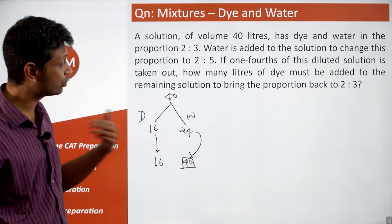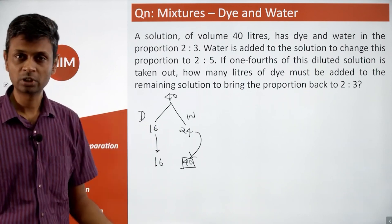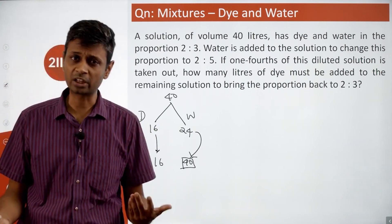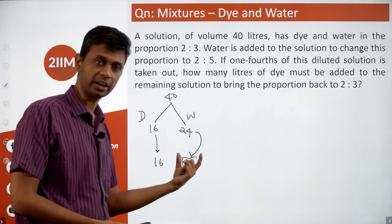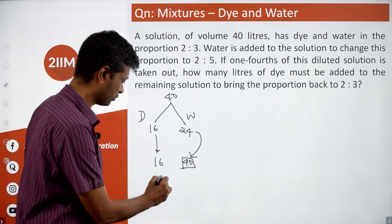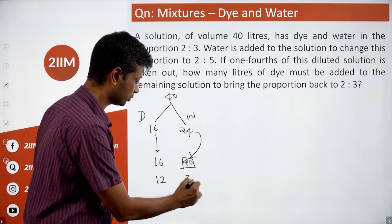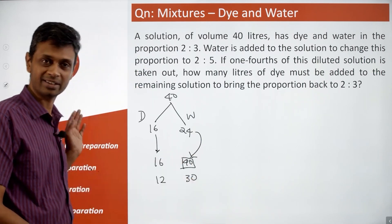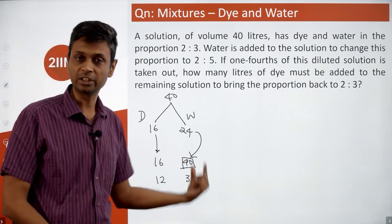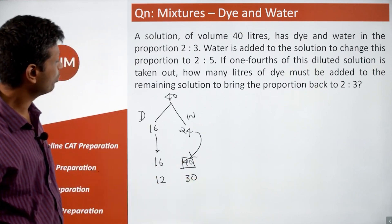Lovely. If one-fourth of this diluted solution is taken out, that means one-fourth of this will get taken out, one-fourth of this will get taken out. So finally we'll have 12 liters of this, 30 liters of this. One-fourth of 16 is 4 that gets taken out, so you have 12 and 30 now.